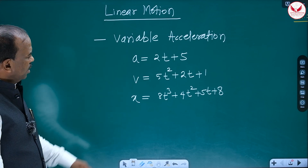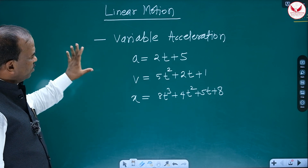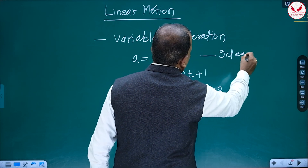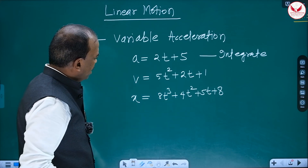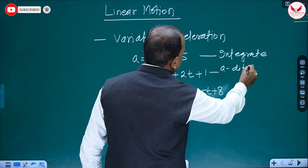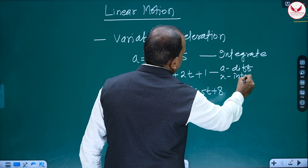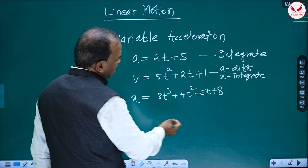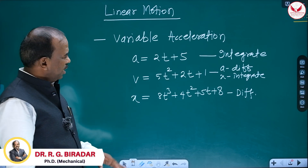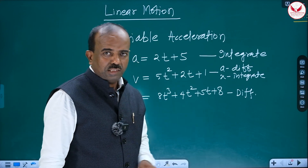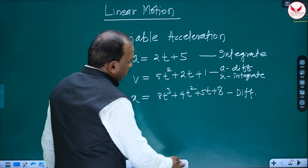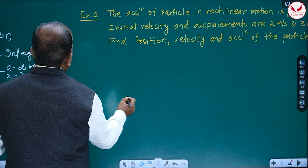In these problems, a will be given in terms of t. If v is given, to get a you differentiate, and to get x you integrate. If x is given, differentiate to get v, and differentiate again to get a. This is probably the simplest part of mechanics — a gift for students who know differentiation and integration.